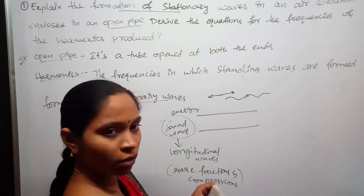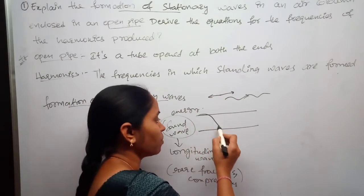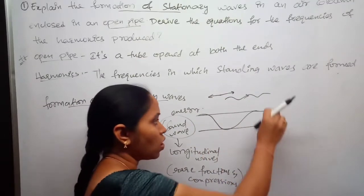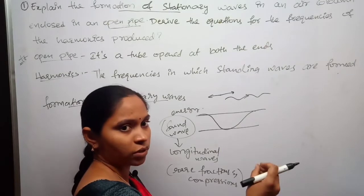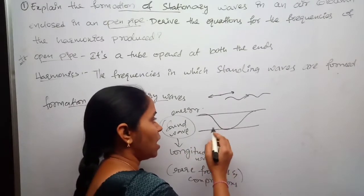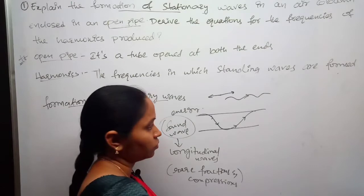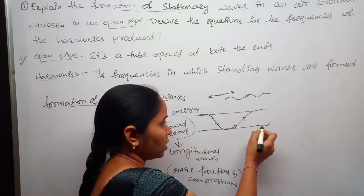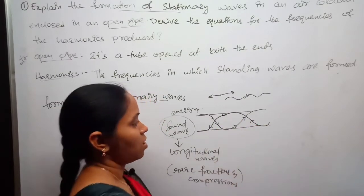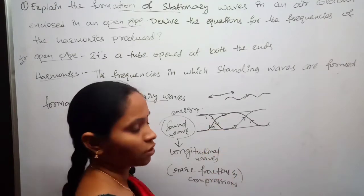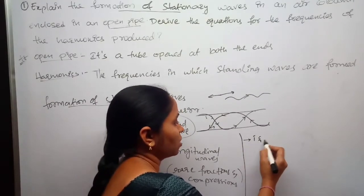This sound wave travels through the open pipe. You must remember one important point: at the ends of this open pipe, antinodes are always formed. Because of the pressure difference of the air column, the wave gets reflected at the end of the open pipe. So we have an incident wave and a reflected wave.